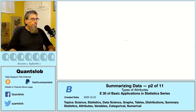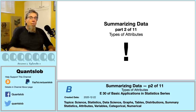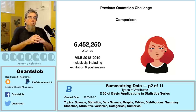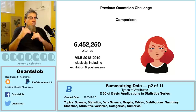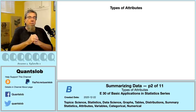Greetings and welcome to another installment of QuantSlob — this is episode 30 in our basic application series. We're motoring on with part two of our summarizing data series. Let's pick up our previous challenge: when someone hears that there were about six and a half million total pitches in the eight major league baseball seasons from 2012 through 2019, what sort of comparison might they formulate? Well, surprise is often provocative — an impactful and memorable statistic is often one that runs counter to people's intuition or prior beliefs.